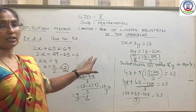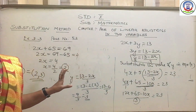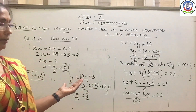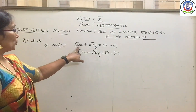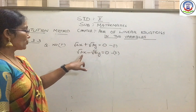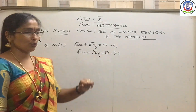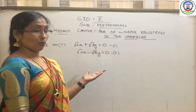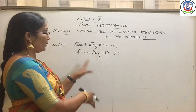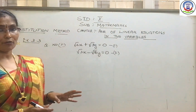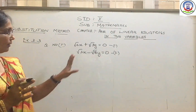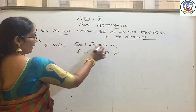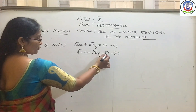Both solutions are found: x equal to 2 and y equal to 3 is the required solution. Children, I think you clearly understood. Now the next question we have to solve is question number 5: root 2 x plus root 3 y equal to 0, and root 3 x minus root 8 y equal to 0. How do you solve this sum by the substitution method? The surds are coming as coefficients, so you might have some confusion.